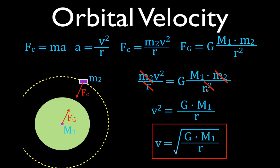Now, I want to point out that the mass of the orbiting object is not in the equation. That means the velocity is not dependent on its mass. The velocity is only dependent upon the mass of the central object and the distance the object is away from the center of mass of that central object. For example, if we had another satellite at the same distance from Earth but with twice the mass, the velocity would still be the same.